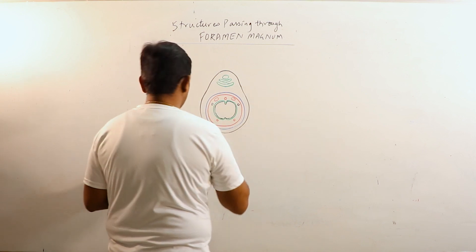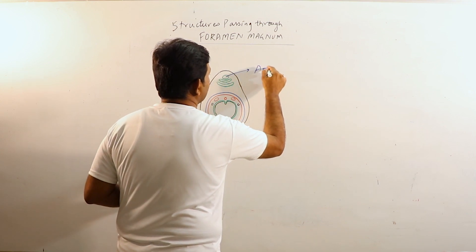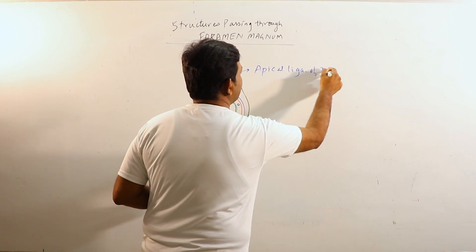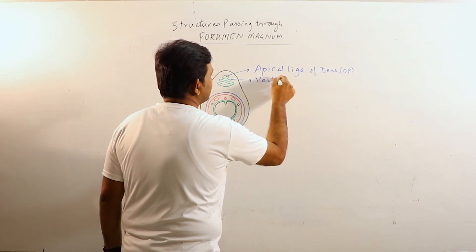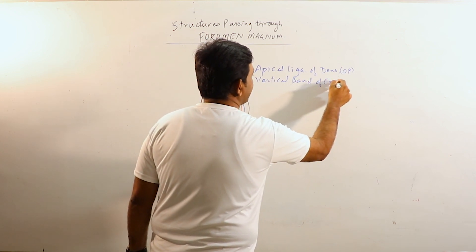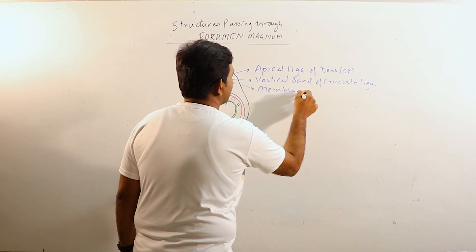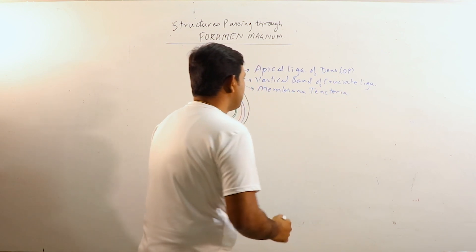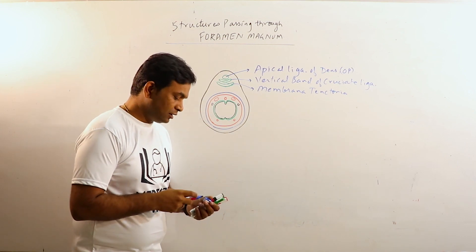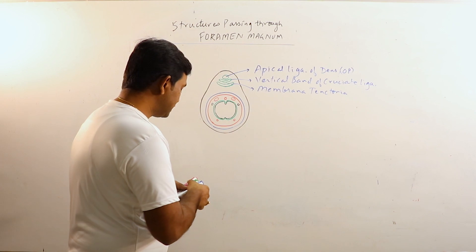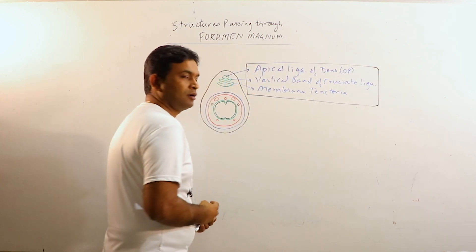The structures passing through the narrow anterior end are: the apical ligament of the dens or odontoid process, the vertical band of the cruciate ligament, and the Membrana Tectoria. Membrana Tectoria is a strong flat fibrous band which covers the dens and most of its ligaments. These are the structures passing through the anterior narrow part of Foramen Magnum.